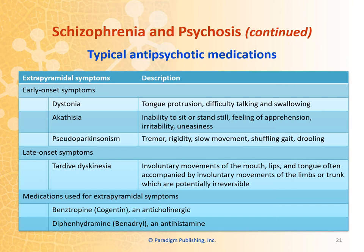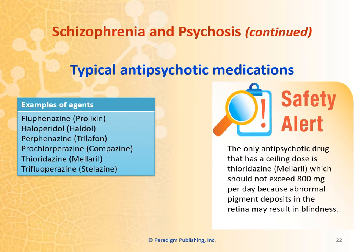Early onset symptoms of antipsychotic side effects include dystonia, which is tongue protrusion or difficulty talking and swallowing; and akathisia, which is an inability to sit or stand still, feeling of apprehension, irritability, and uneasiness; and pseudoparkinsonism, which includes tremors, rigidity, slow movement, shuffling gait, and drooling. Videos of patients with akathisia and pseudoparkinsonism have been included in the module activities. Examples of typical antipsychotic agents include fluphenazine, haloperidol, perphenazine, prochlorperazine, thioridazine, and trifluoperazine.